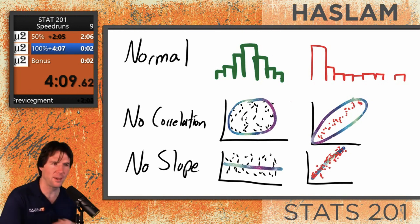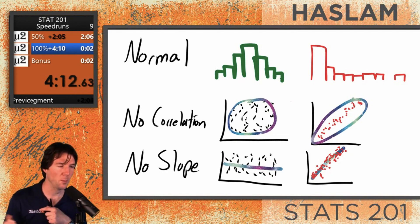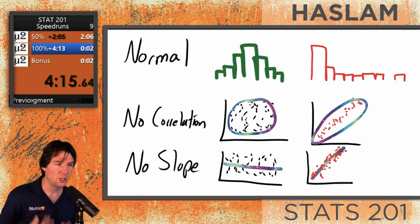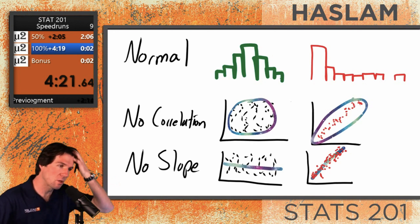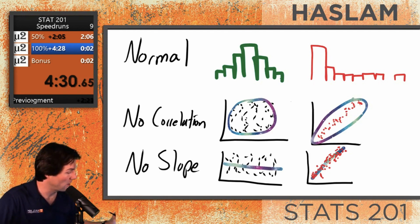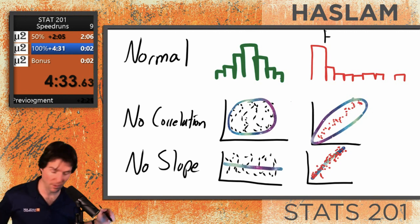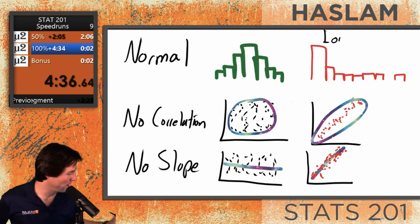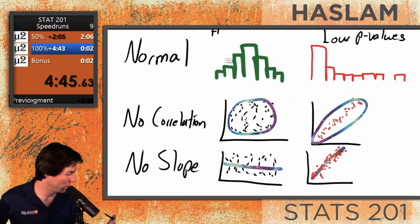Look at that slope over there — that doesn't look likely. I thought there was no slope. So what do you do? You reject your null each time. All of these on one side are the nulls for the test — we didn't write them in statistical notation, but so someone could generally understand them. All of these right here are going to have low p-values, and these all have high p-values.